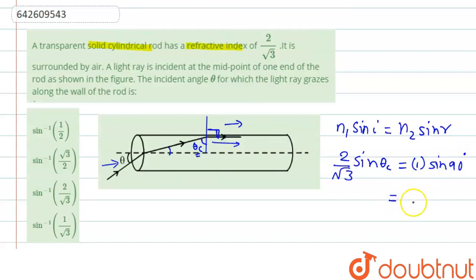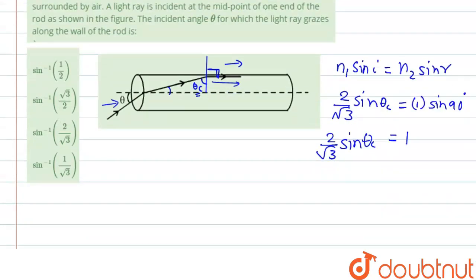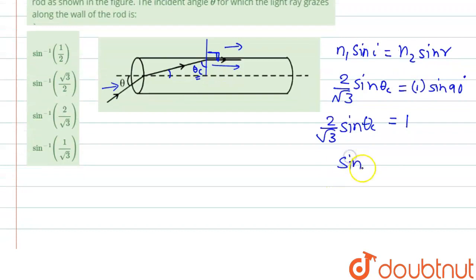So here we can write 1 into sin 90 that is 1 and 2 by root 3 sin theta c. Or we can write sin theta c equal to root 3 by 2, so theta c will be 60 degree.